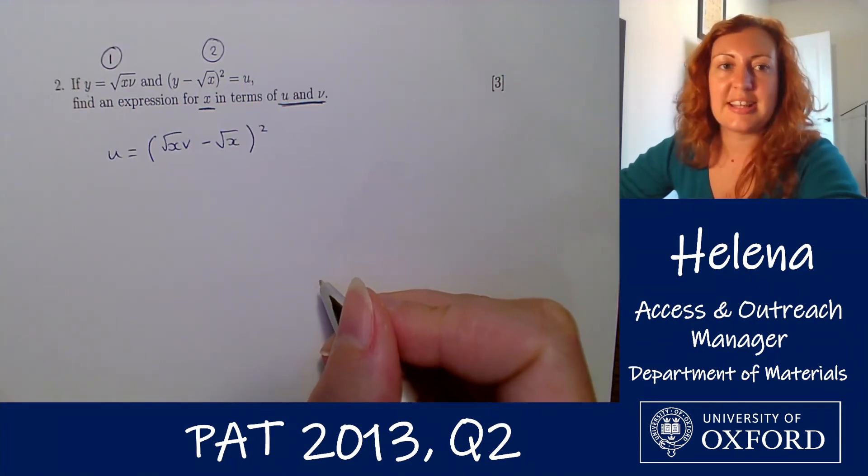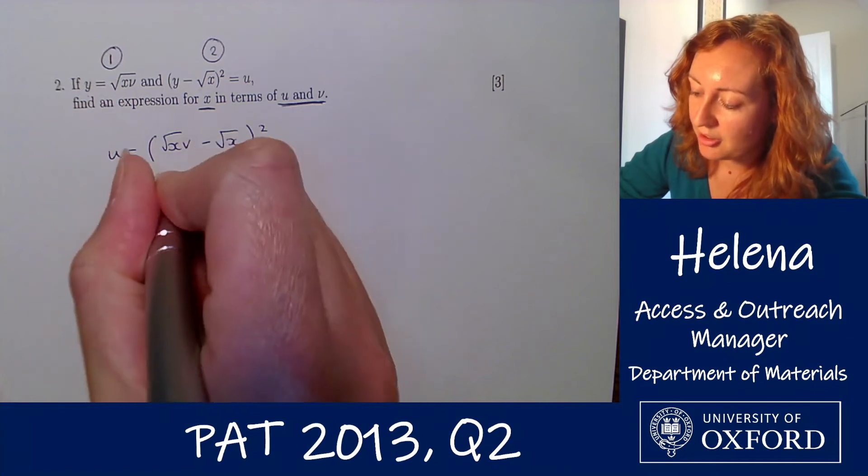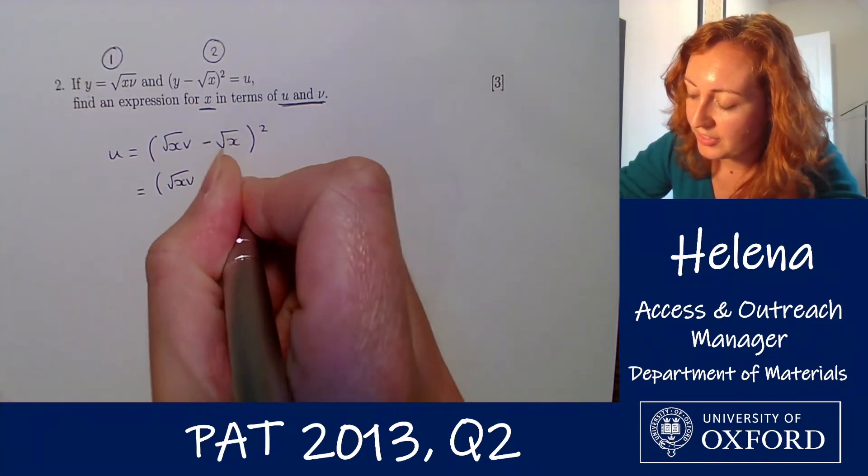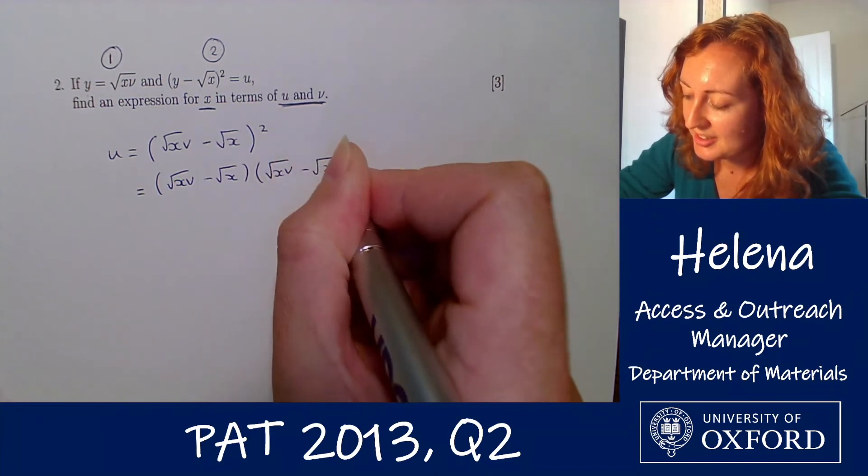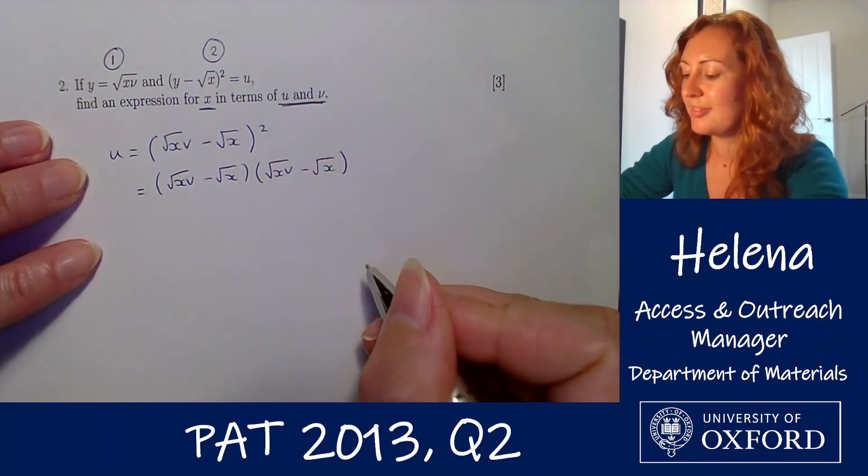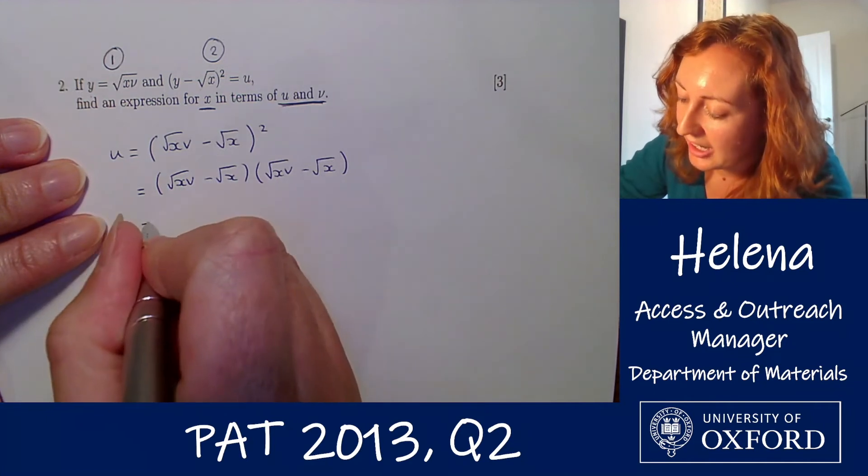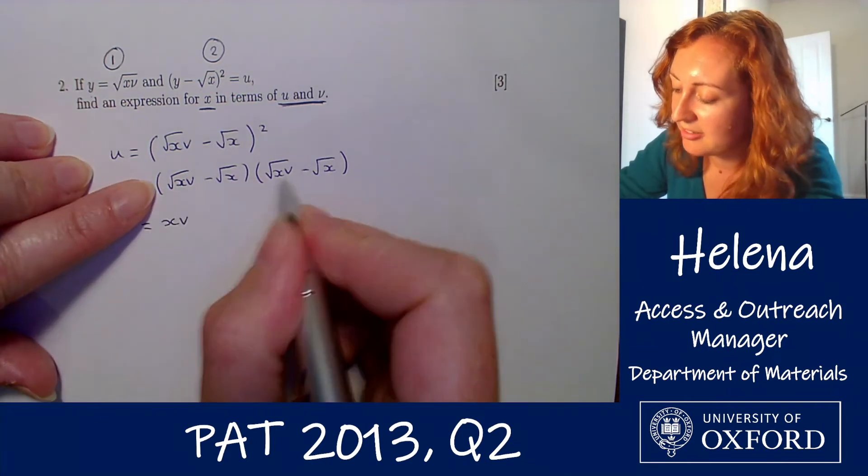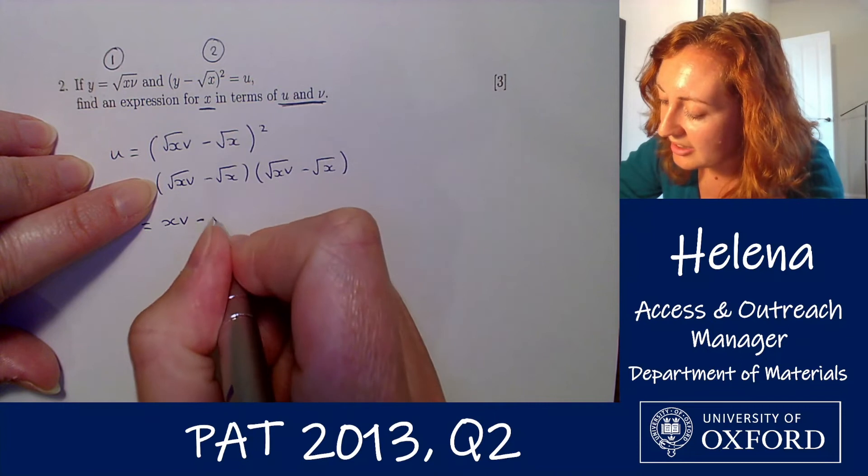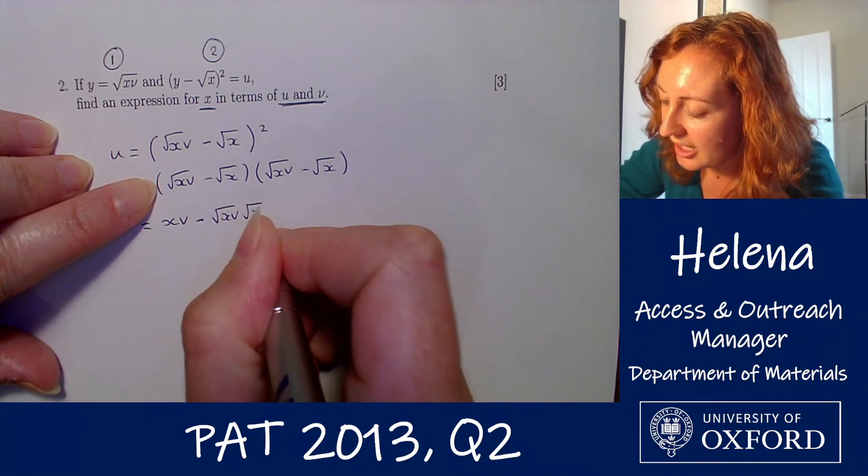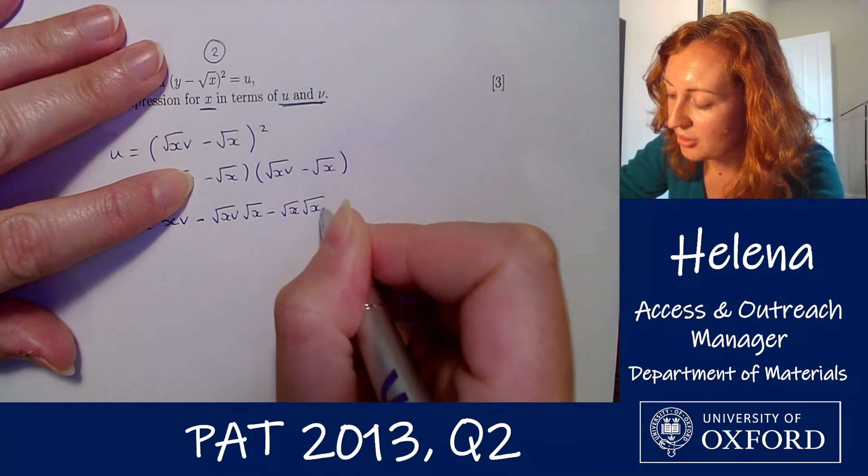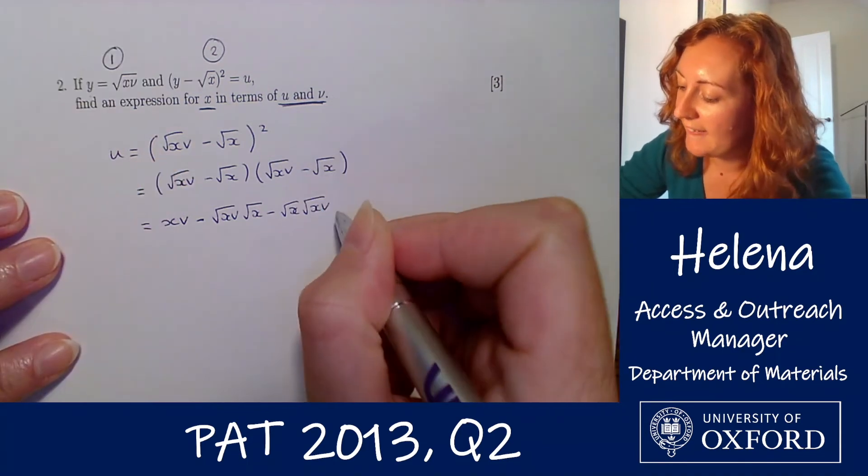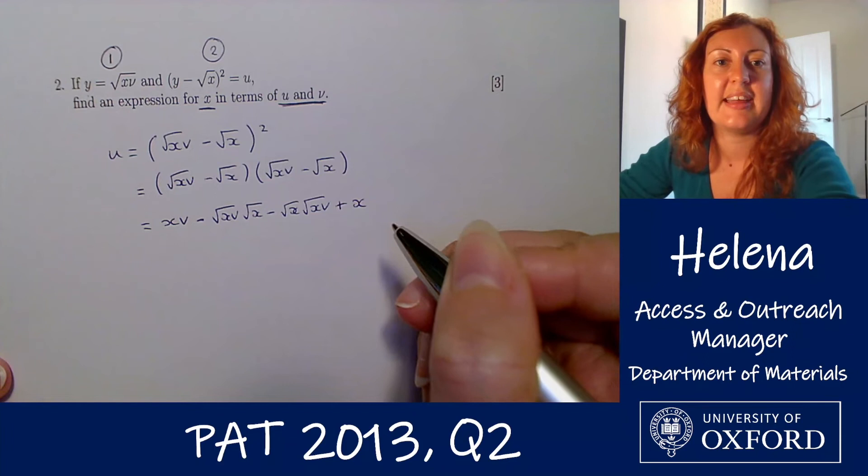So now let's multiply out this bracket. You might be able to do this all in one step. However, I'm going to write out the two brackets separately to make sure I don't miss any of the terms here. So if we multiply this out we have x v here, we have a minus root x v times root x, a minus root x times root x v, and then a plus x at the end here.